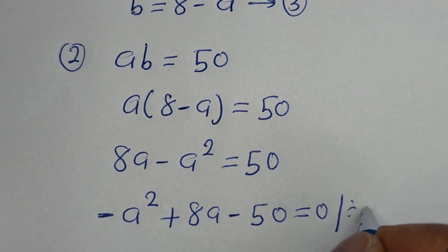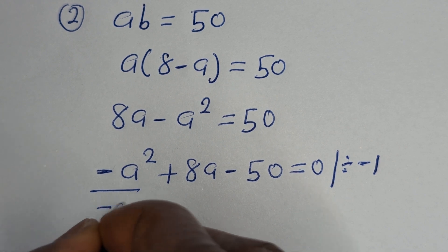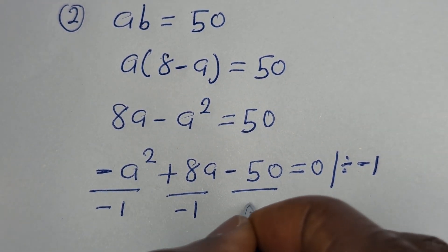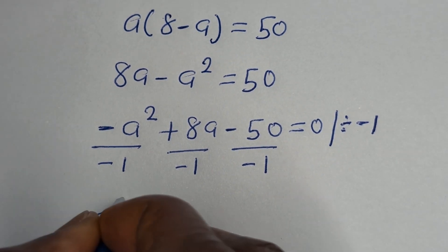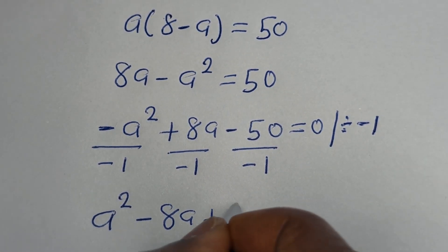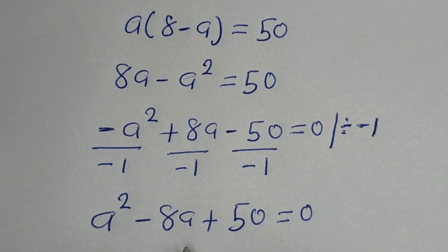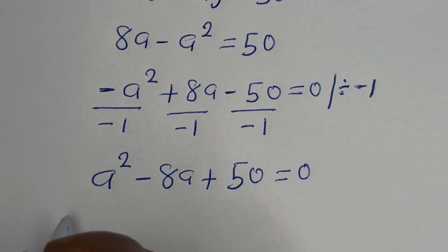Let us divide the whole equation by minus 1: this divided by minus 1, this divided by minus 1, and this divided by minus 1. We have A squared minus 8A plus 50 is equal to 0. This is a quadratic equation. Let us solve this using the quadratic general formula.